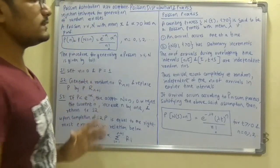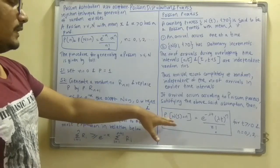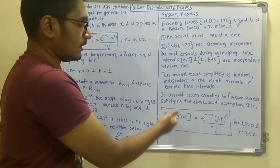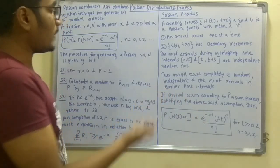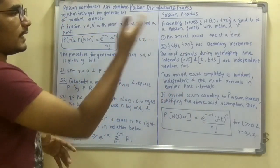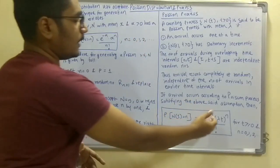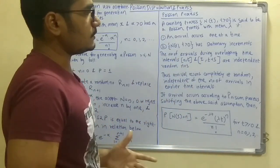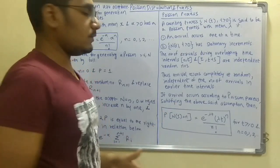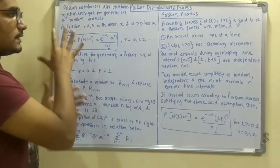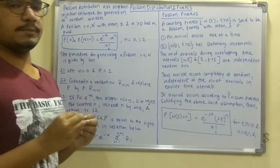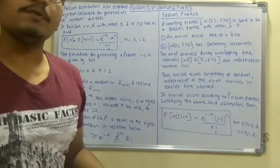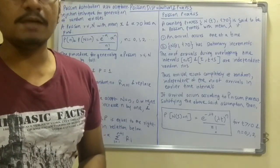Since we have mean lambda, the probability equation for the counting process N(t) becomes: P(N(t) = n) = e^(−λt) · (λt)^n / n!, for t ≥ 0 and n = 0, 1, 2, ... up to infinity, replacing alpha with lambda×t. This covers the Poisson distribution and Poisson process in computer simulation modeling. Hope you enjoyed this video — if you found it helpful, please hit the like button and subscribe. Thanks for watching.